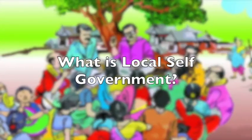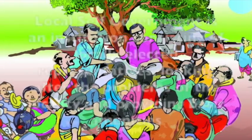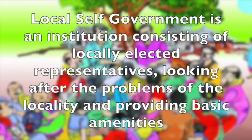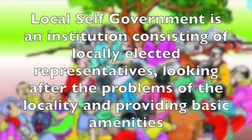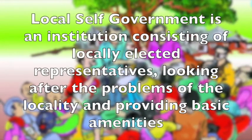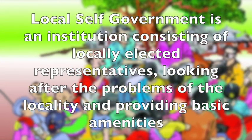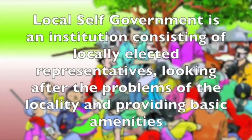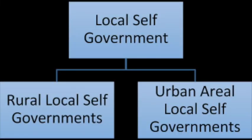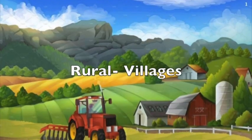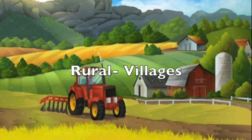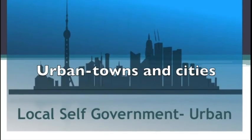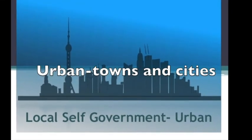What is Local Self-Government? Local Self-Government is an institution consisting of locally elected representatives looking after the problems of the locality and providing basic amenities. Local Self-Government is of two kinds: rural and urban. Rural refers to villages, and urban refers to towns and cities.